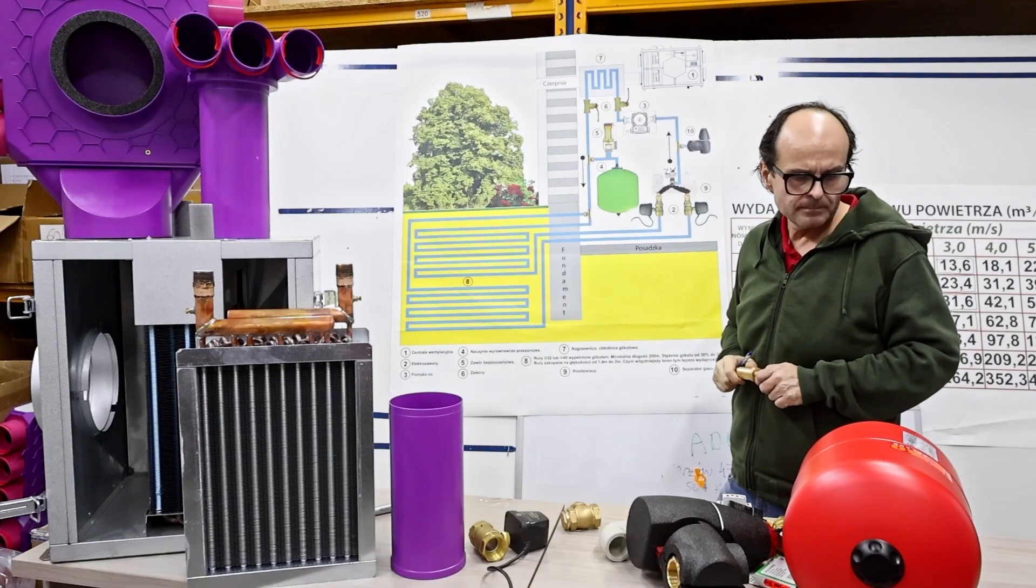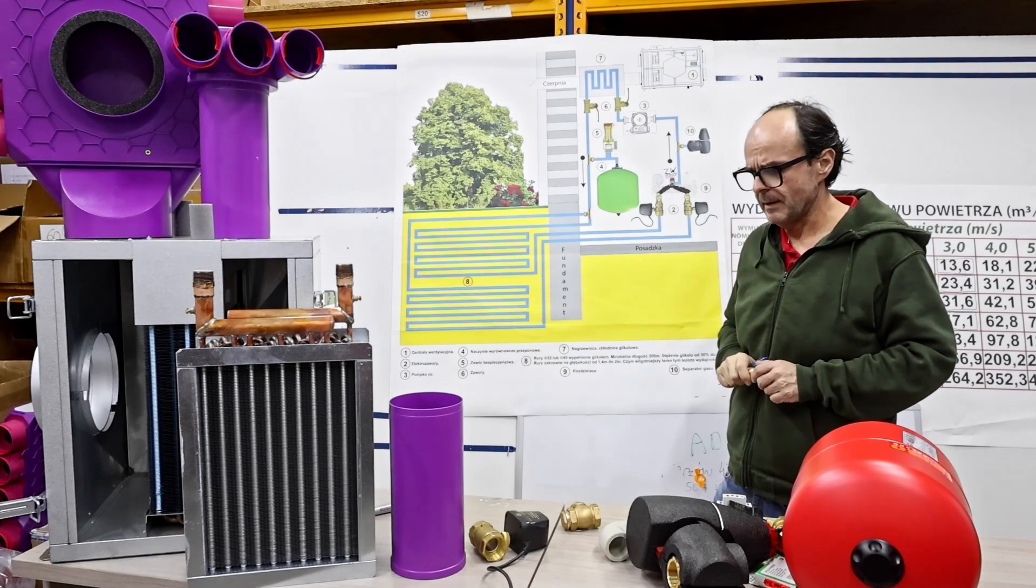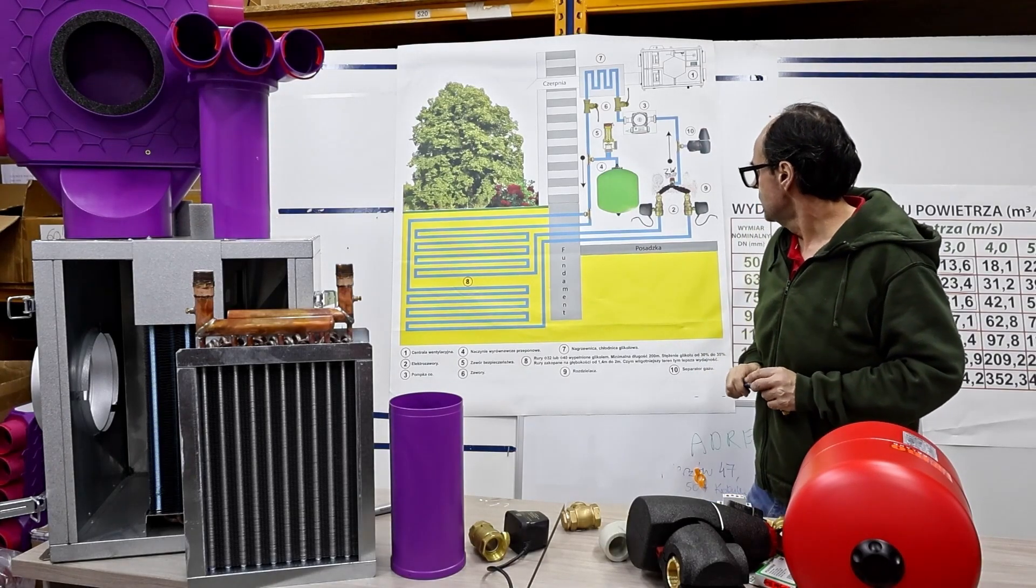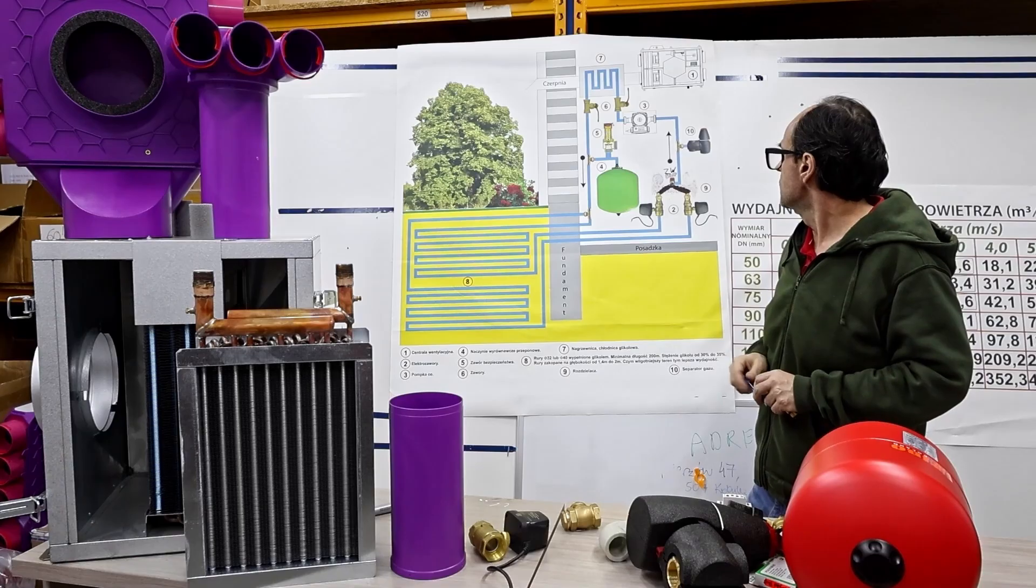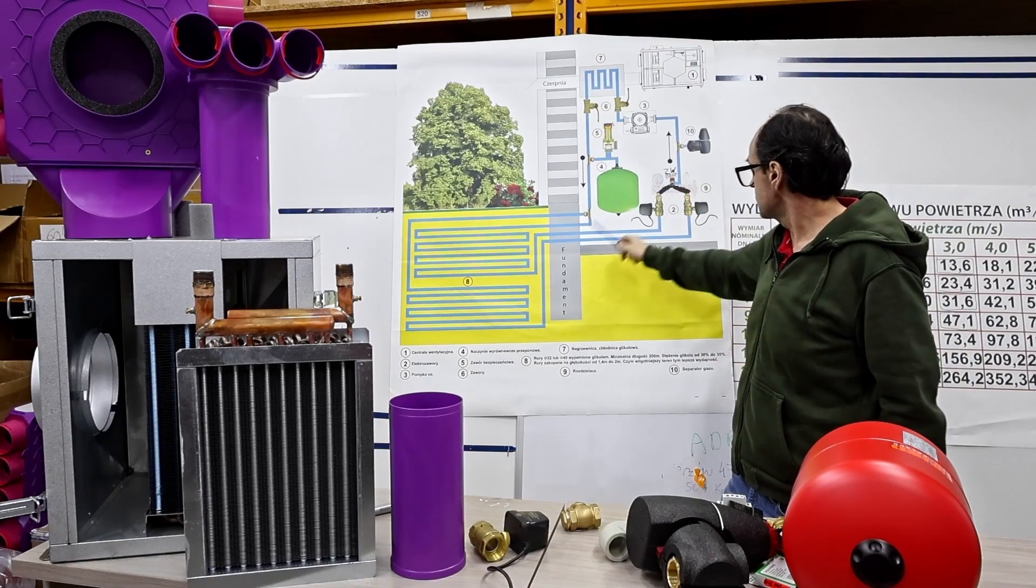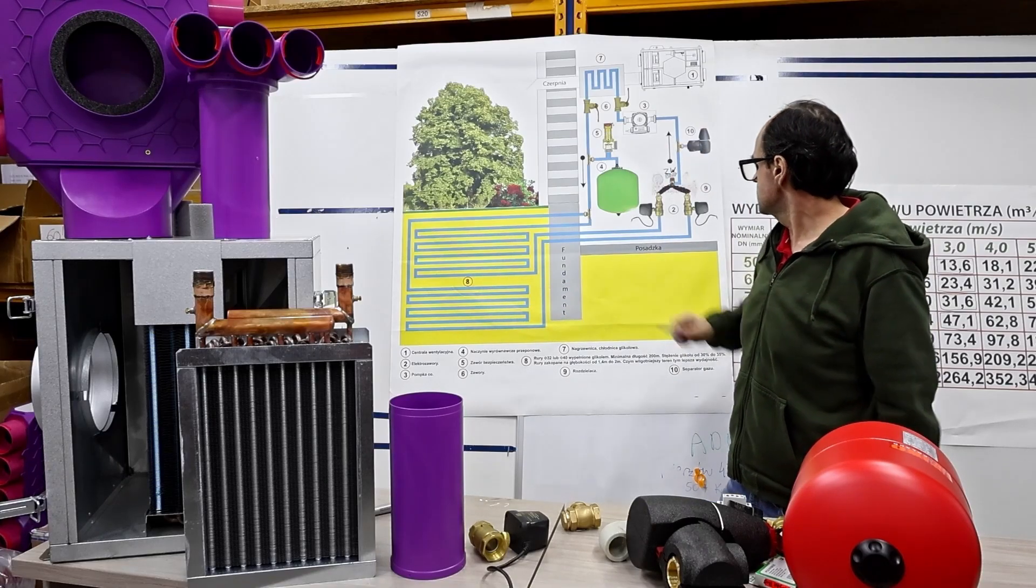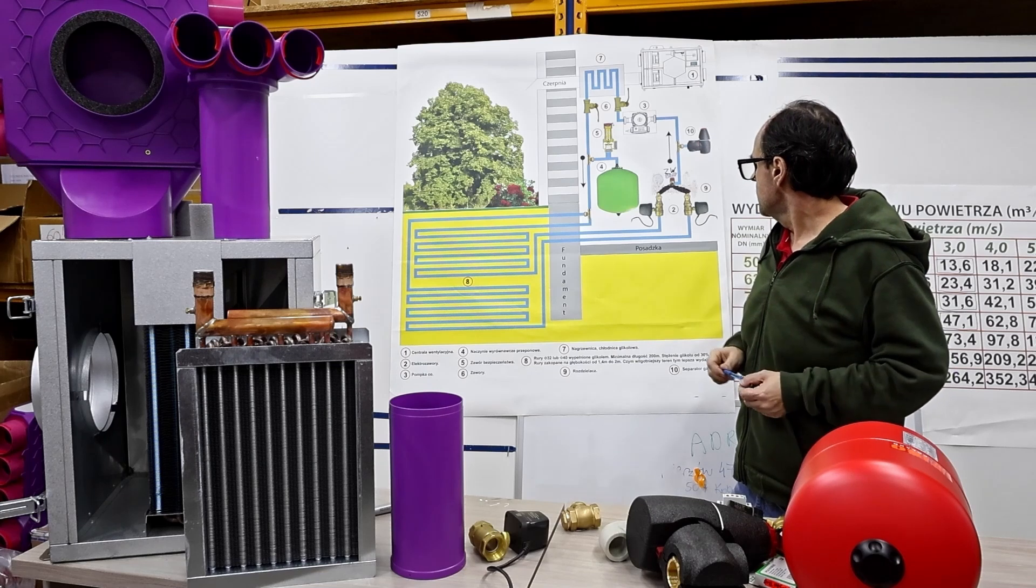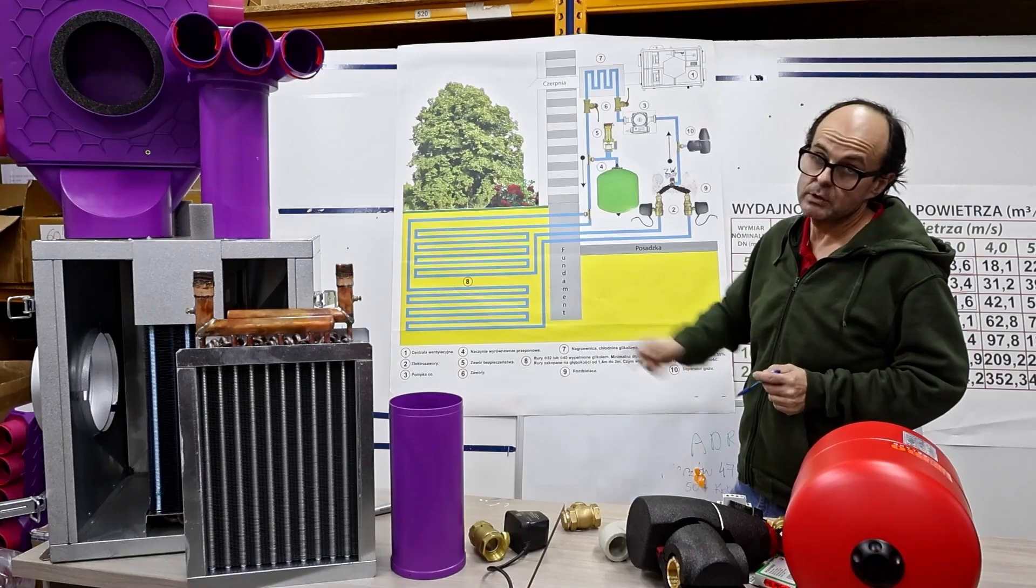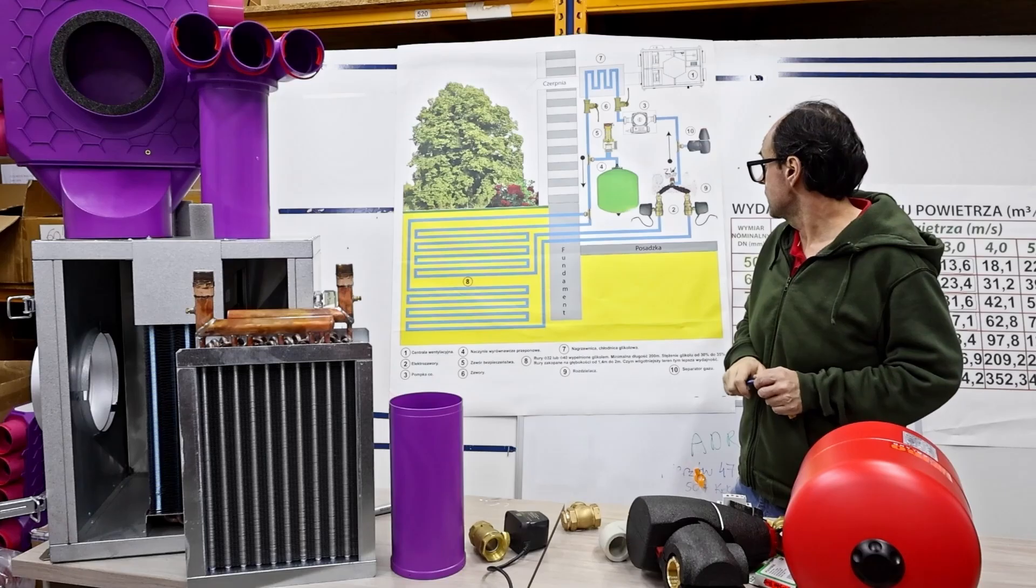In the previous episode about glycol ground-coupled heat exchangers, I explained the characteristics of the ground. It is explained in more detail there. For a glycol active ground-coupled heat exchanger, we make two circuits. These circuits are, say, a tube with a diameter of 40 or 32 millimeters. The larger the diameter, the larger the surface area, thus making it more efficient.